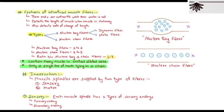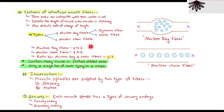The features of intrafusal muscle fibers: their ends are contractile while their center is not. They detect the length of the muscle when the muscle is stationary, providing proprioception. They also detect the rate of change of length — the velocity at which the muscle length changes. There are two types of intrafusal fibers: nuclear bag fibers and nuclear chain fibers. Nuclear bag fibers are subdivided into dynamic fibers and static fibers.